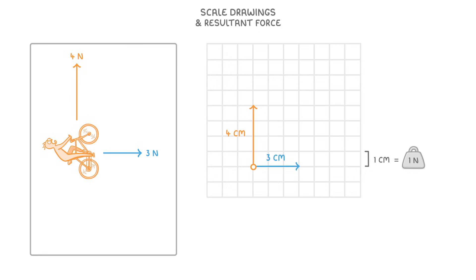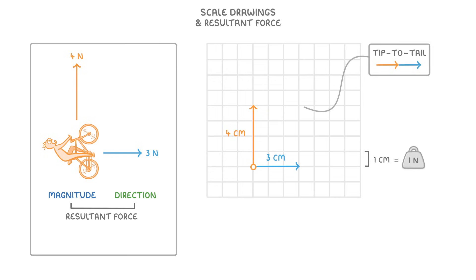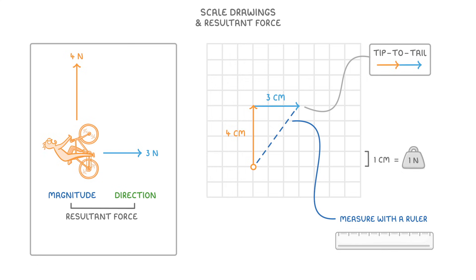Now that we have a scale diagram, we can find the magnitude and direction of the resultant force by placing these two vector arrows tip to tail, which we could do by moving this one up here, so that the tip of the north vector is just touching the tail of the east vector. Then to find the resultant force, we just draw a line from the starting point over to the end point. And because our drawing is to scale, we can just measure it with a ruler to see how long it is — in this case, 5cm.